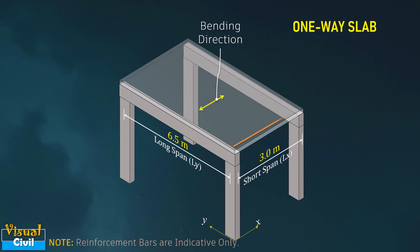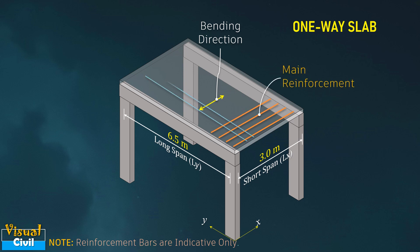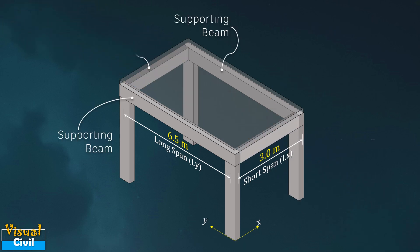In this slab, the main reinforcement is provided along the direction of bending, while distribution reinforcement is provided perpendicular to it. Let us add the supporting beam to the shorter side of the slab.